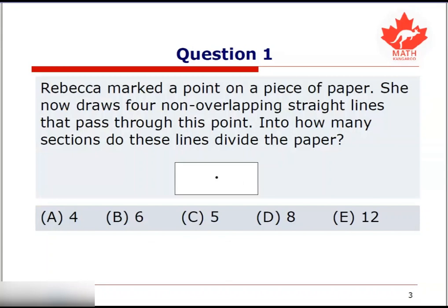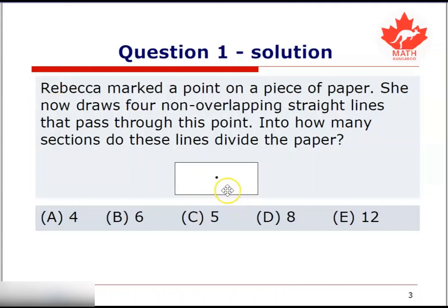Now let's look at some examples and we begin with question 1. Rebecca marked a point on a piece of paper. She now draws four non-overlapping straight lines that pass through this point. Into how many sections do these lines divide the paper? So we know that there is a point on a piece of paper and now we're going to draw four lines that pass through the point and do not overlap each other.